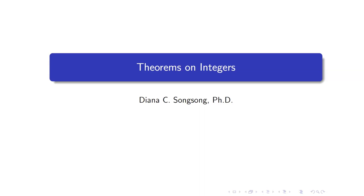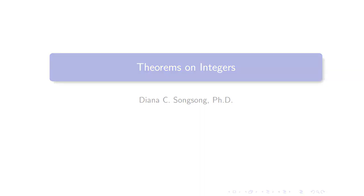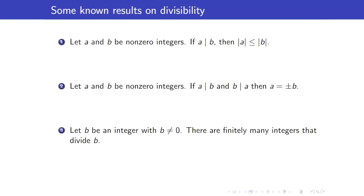In this lesson, we are going to look at some proofs of theorems on integers. Here are some known results on divisibility. Number one: let a and b be non-zero integers. If a divides b, then the absolute value of a is less than or equal to the absolute value of b. We have the absolute value sign here because a and b can be negative. If we consider the case when a and b are positive and a divides b, then definitely a has to be less than or equal to b.